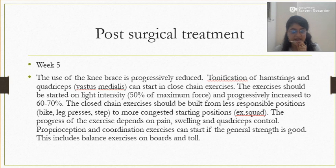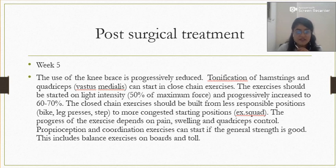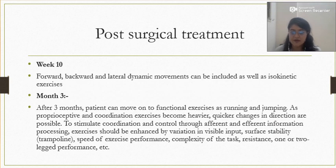Exercises should be started at light intensity and progressively increased. Closed kinetic chain exercises should be built from less demanding positions such as bike or leg presses or stepper, progressing to more demanding positions such as squatting. The progress of exercise depends on pain, swelling, and quadriceps control — each ACL rehabilitation patient is different and must be progressed accordingly. Proprioception and coordination exercises can start when general strength is good, including balance exercises on boards and bolsters. At week 10, forward, backward, and lateral dynamic movements can be included, as well as isokinetic exercises.